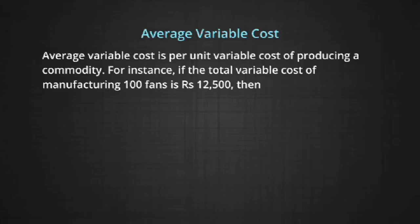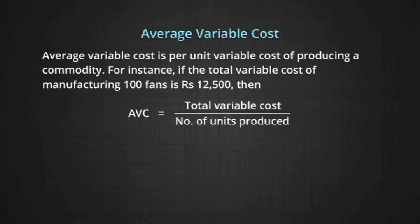Average variable cost is the per unit variable cost of producing a commodity. We calculate it by dividing the total variable cost by the number of units produced. For instance, if the total variable cost of manufacturing 100 fans is 12,500, then AVC equals 12,500 divided by 100, which gives us 125 rupees.